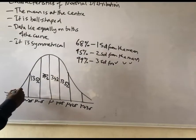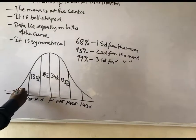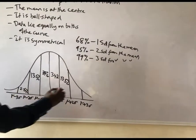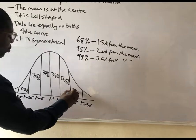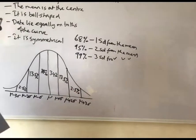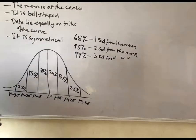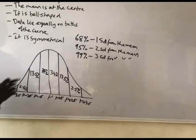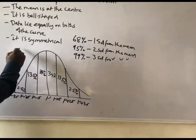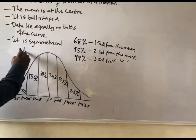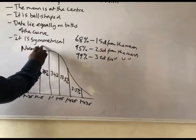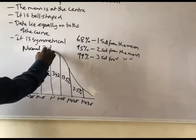The area within three standard deviations is made up of 2.35% on the far left and 2.35% on the far right. So this is a typical normal distribution.